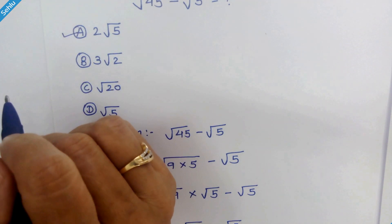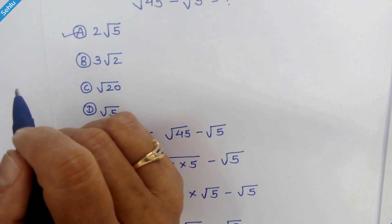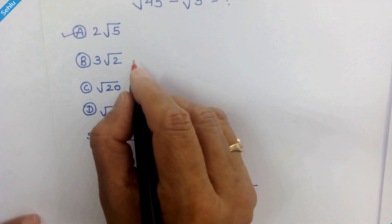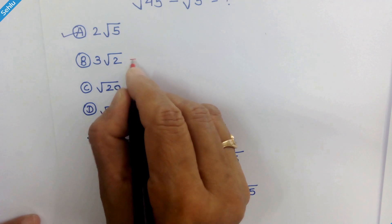But watch the options carefully. Some questions in the competitive exams may have more than one correct option. If we try 3 times square root of 2.